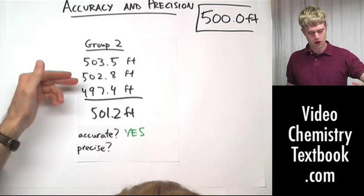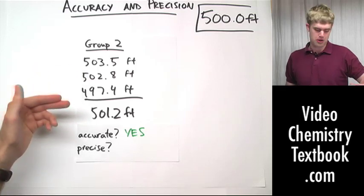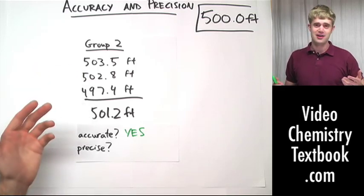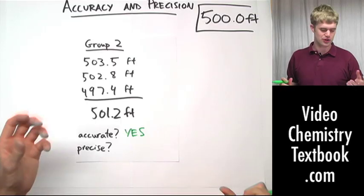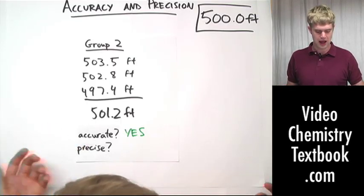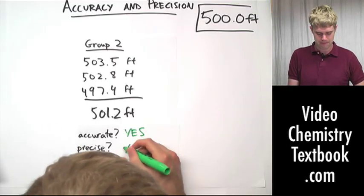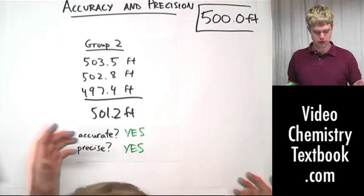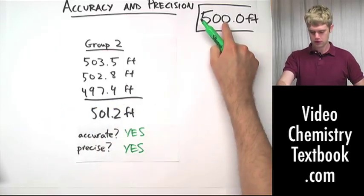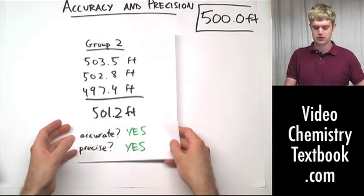503, 502, 497? Considering that this group isn't able to use rulers, measuring tape, or meter sticks, yeah, I'd say it's pretty precise. They're able to get them pretty close together. Accurate and precise. So that's group two.